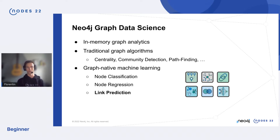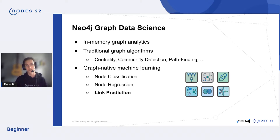There was a previous talk by Mathias and Adam about node classification and node regression — problems I won't go into much detail here — but you can apply models to classify a node. The machine learning part I want to cover today is link prediction.